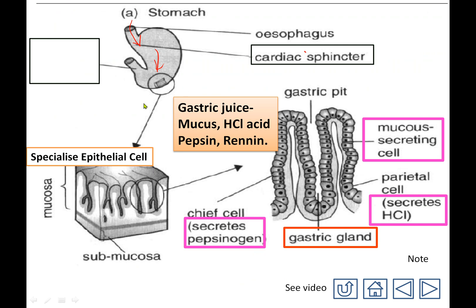After digestion, all the food in the stomach may stay there for 3 to 4 hours, and finally they become a semi-liquid food called chyme. The chyme will then slowly be released into the small intestine, specifically the beginning part called the duodenum.